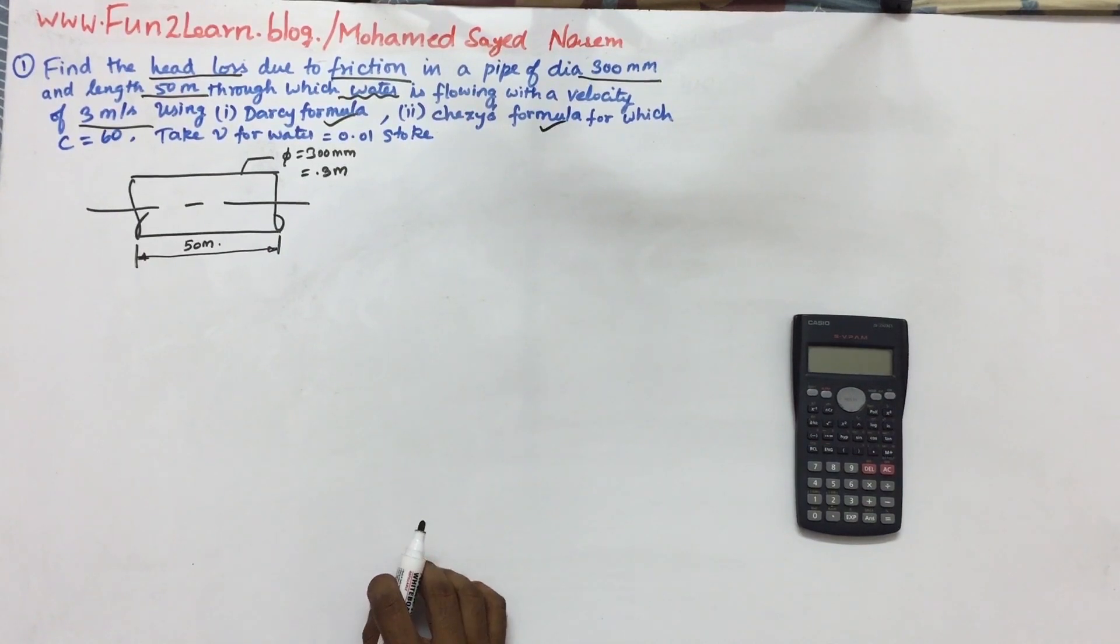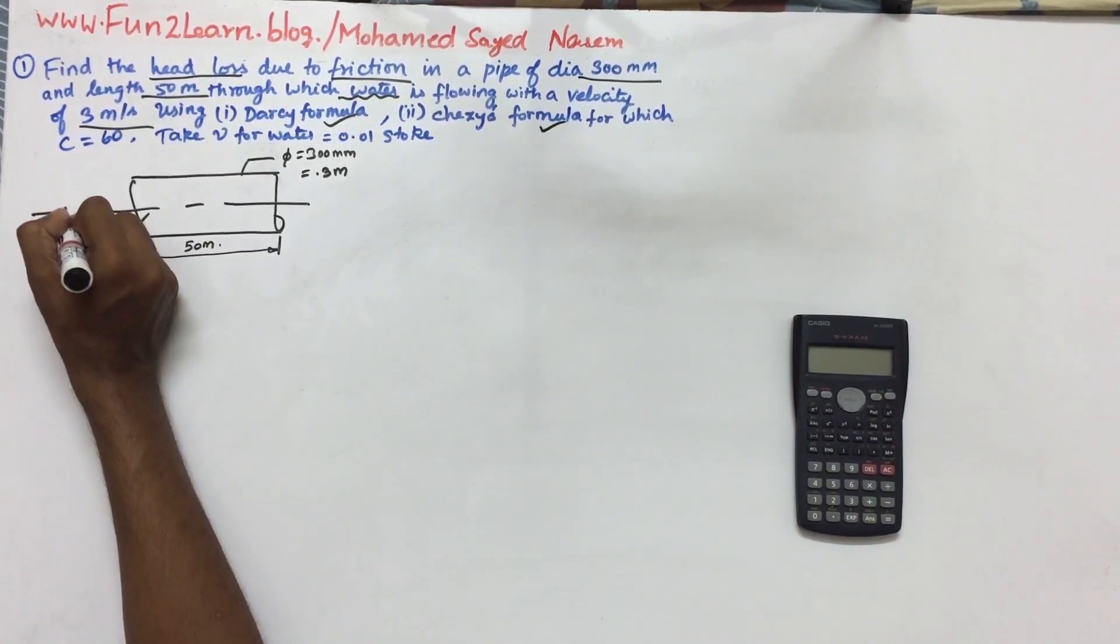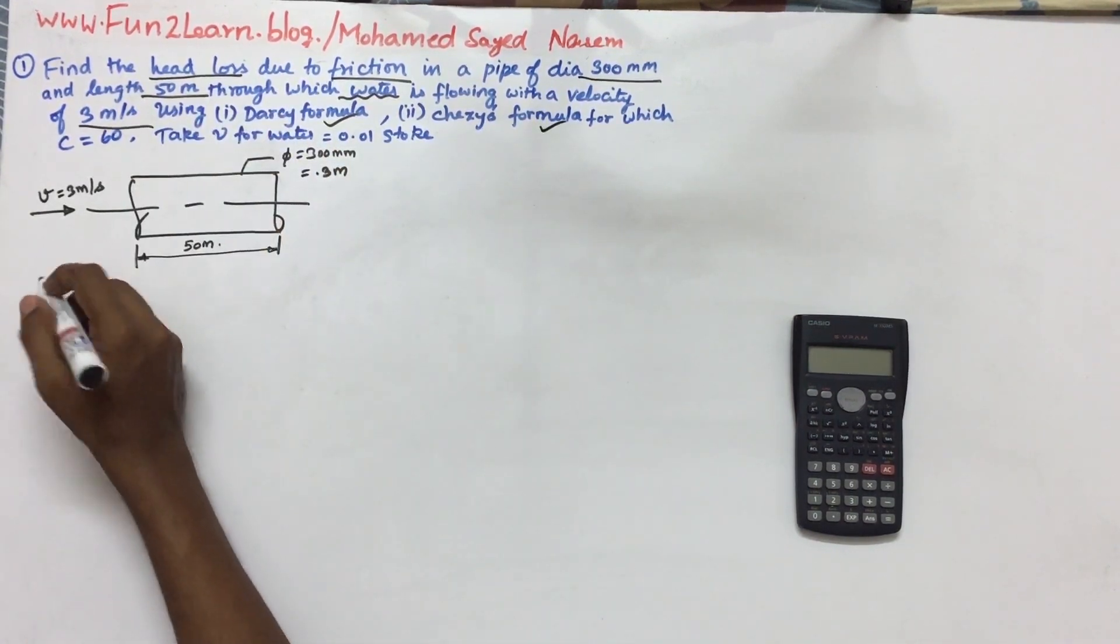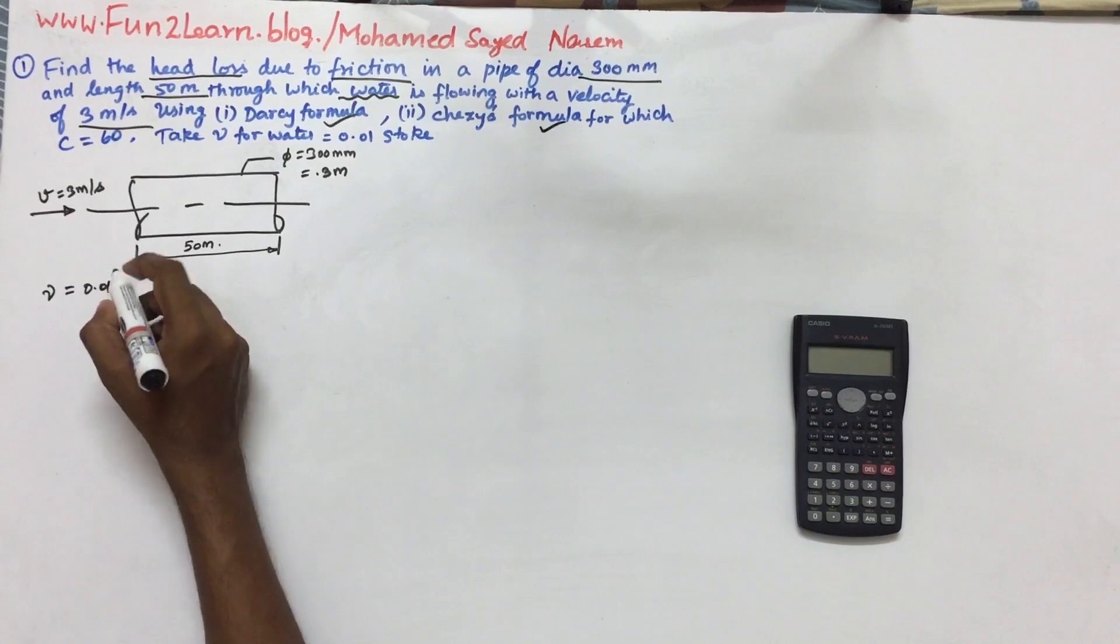First, let's look at the given values. Water velocity is 3 meters per second. New value is 0.01 stoke.